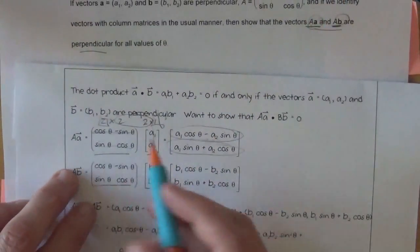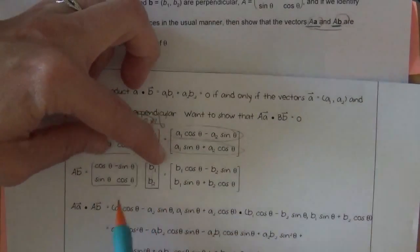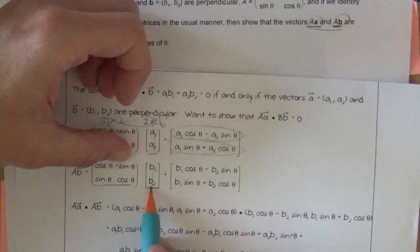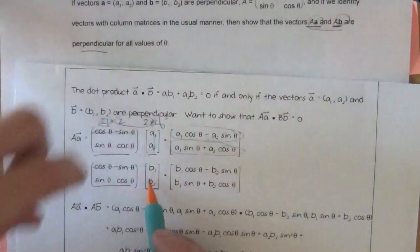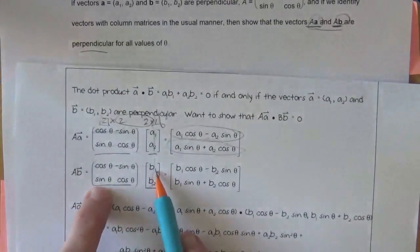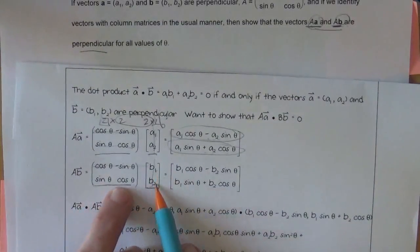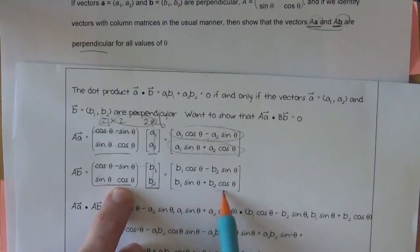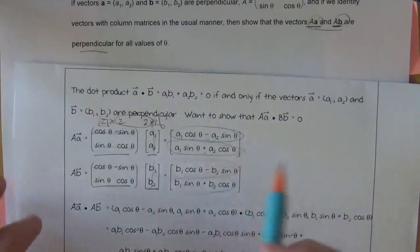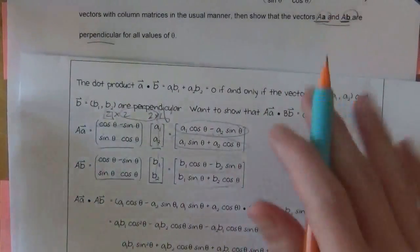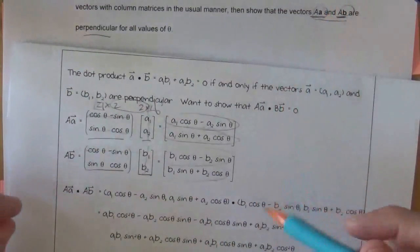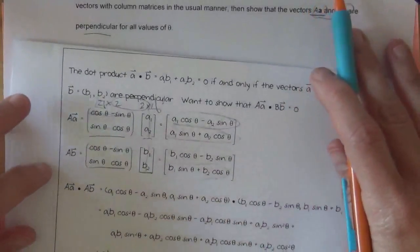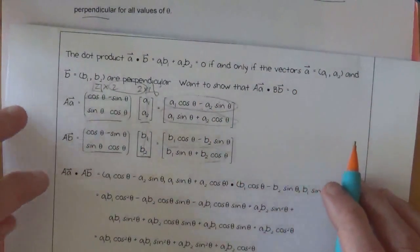Over here, we have the same thing going on. So it's sine theta times A1 plus cosine theta times A2. They did it again here, so if you didn't catch it the first time, we'll do it again. This is B1 cosine theta plus a negative B2 sine theta. And then same thing, B1 sine theta plus B2 cosine theta. These are kind of just chunkier versions of normal matrix multiplication. So if that looks weird, you can take a look at normal matrix multiplication. It's the same thing, it just looks a little funny.